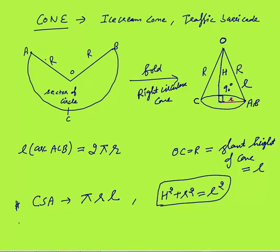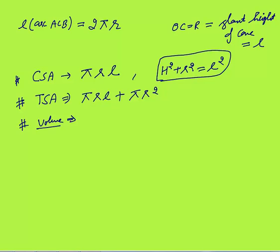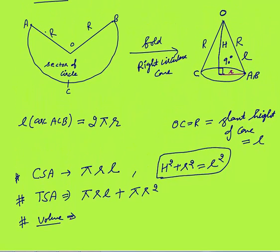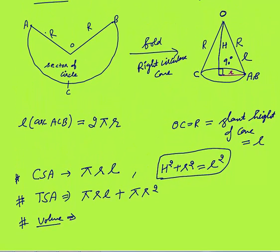Total surface area of cone equals curved surface area plus area of the circular base, that is πrl + πr². Volume of cone — how much water can come inside a solid cone — is (1/3)πr²h, where r is the radius and h is the height of the cone.